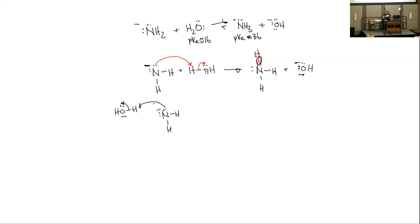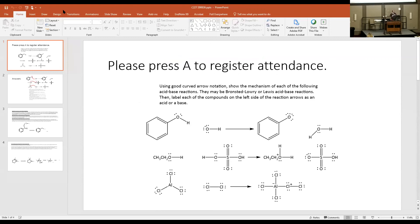Higher pKa value means smaller Ka value — exactly right. That's all because of the minus sign in the definition pKa = −log(Ka). The payoff is significant: you go from unwieldy numbers like 3.81 × 10⁻¹⁷ to nice numbers like 16.3, which makes things much easier to conceptualize.